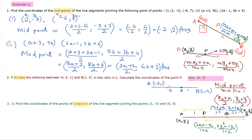So 2 will be multiplied with the coordinates of B and 1 will be multiplied with the coordinates of A, divided by M plus N, that means 2 plus 1. For the x-coordinate of P: 1 into -2 plus 2 into 1, divided by 3. There is always a plus sign in case of internal division — P internally bisects AB. So 1 into -2, then 2 multiplied with B's coordinate which is 1, giving 2 into 1, all divided by 2 plus 1.